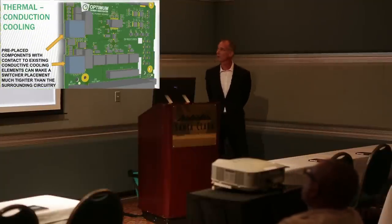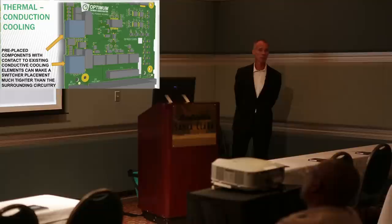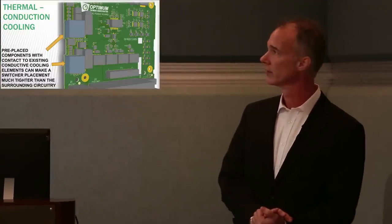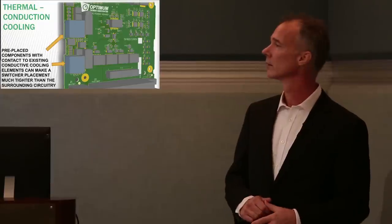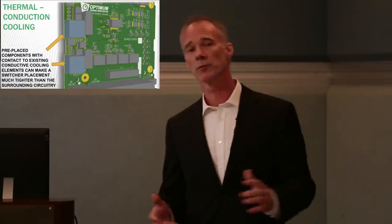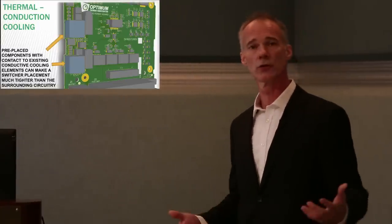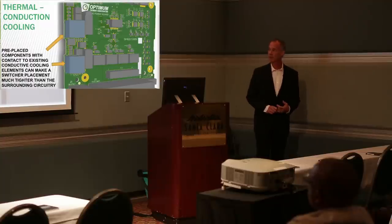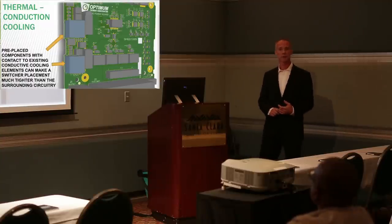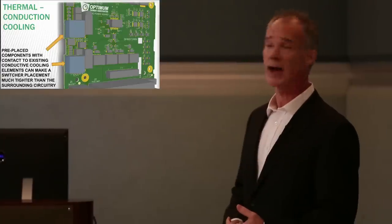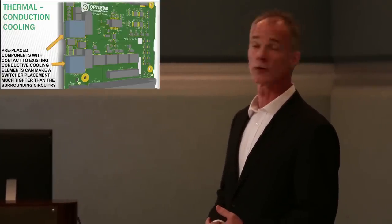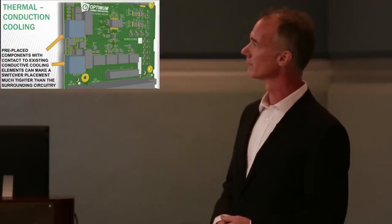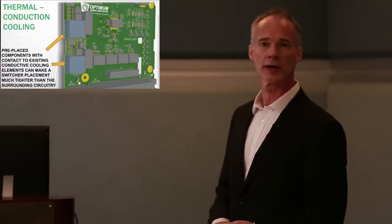Thermal conduction, seen in laptops, makes contact with components to extract heat — for example, a backside conductive cooling element. Many times this is done mechanically, possibly from a previous product. This is an example of pre-placed components, which gives very little leeway in layout. When forced to use pre-placed components and also make the switcher work well, you may end up with placement that's far denser in certain areas than others.